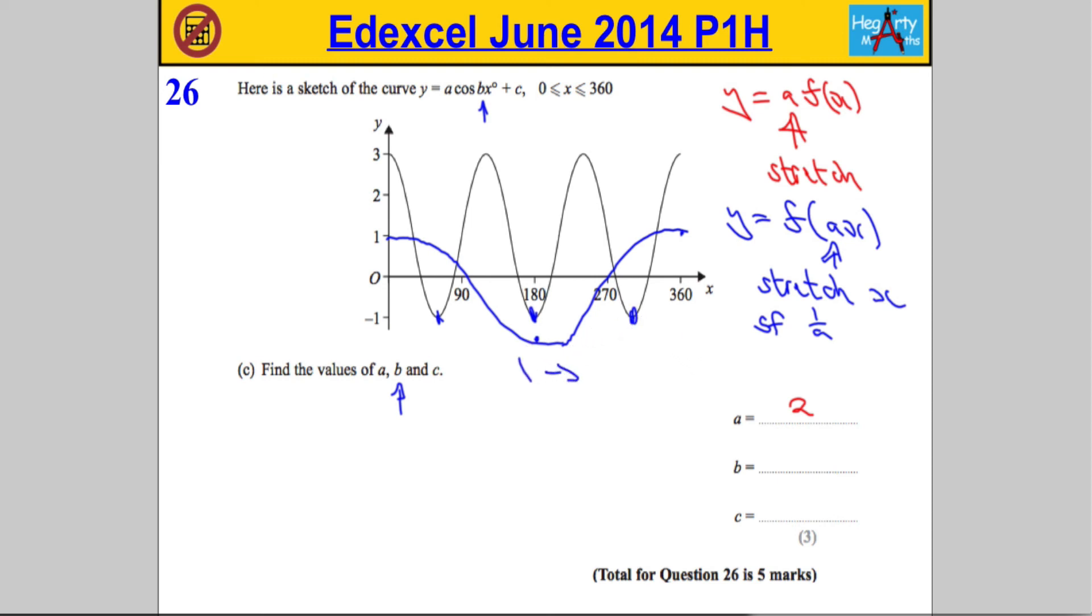Now that means if one trough becomes three troughs, that means it's been basically squashed in by a factor of one over three, which means that the scale factor must be three. So b has to be three.